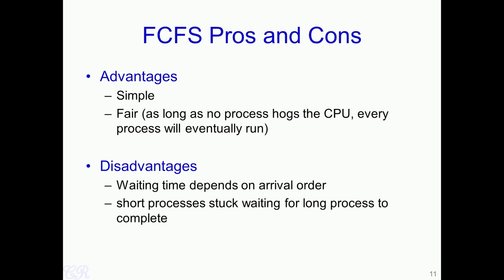However, FCFS has several advantages: it is extremely simple, so the scheduling algorithm completes quickly with very little overhead and minimal context switch delays. It is also fair — as long as no process hogs the CPU indefinitely, every process will eventually get to execute. The disadvantages are that waiting time depends on arrival order, and short processes are stuck waiting for long processes to complete — the convoy effect.